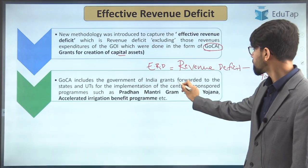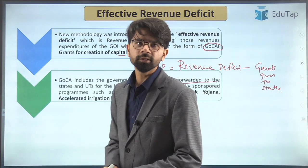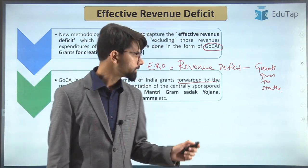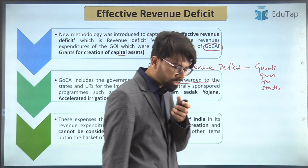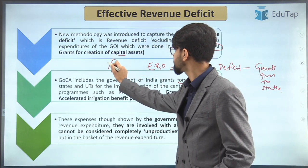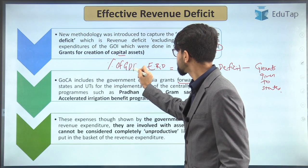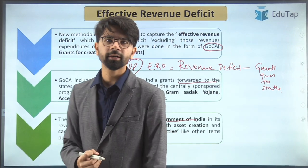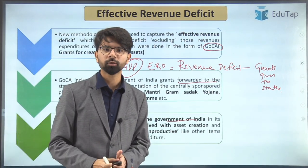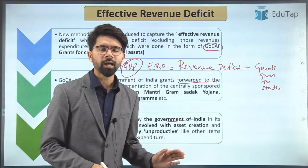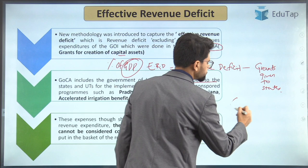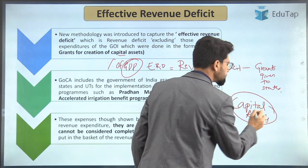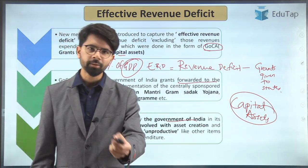Examples of grants forwarded to states include schemes such as Pradhan Mantri Gram Sadak Yojana and the Accelerated Irrigation Program, among many other centrally sponsored schemes. Effective revenue deficit is also measured as a percentage of GDP. The expenses shown by the government of India in its revenue expenditure cannot be treated as completely unproductive, because they lead to the creation of capital assets which will be beneficial for the economy for many upcoming years.